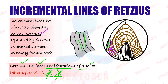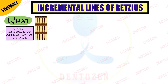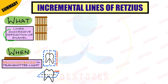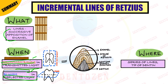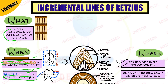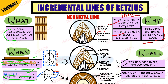To summarize: incremental lines of Retzius represent the successive apposition of enamel in a weekly rhythm. In transmitted light they appear as brownish bands; in reflected light as bluish-white. In longitudinal section they are seen as a series of lines surrounding the tip of dentine; in cross section as concentric rings. They are caused by variations in calcification, variations in organic structure, and periodic bending of enamel rods. The neonatal line is an enlarged incremental line present between prenatal and postnatal enamel.